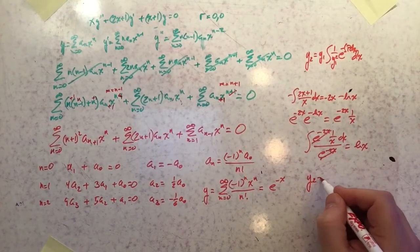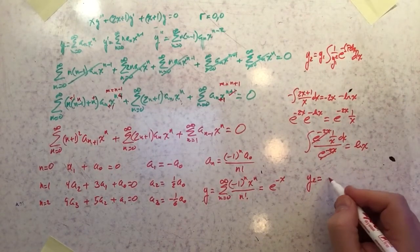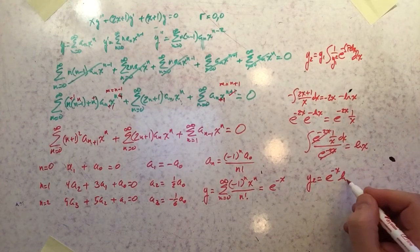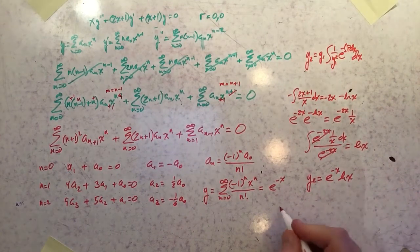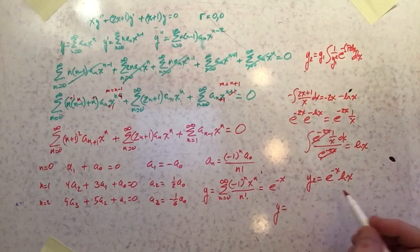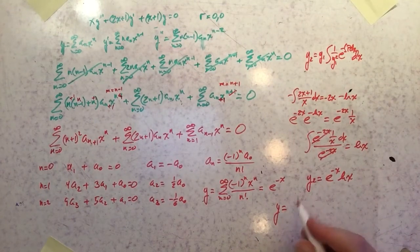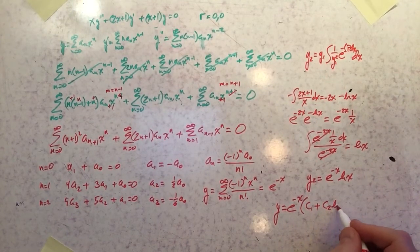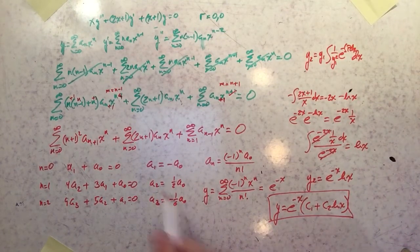So y₂ = y₁ · ln x = e^(−x) ln x. That gives us the full basis of solutions: y = e^(−x)(c₁ + c₂ ln x). That is the complete solution to question number 5.